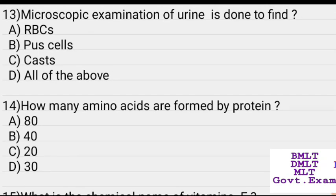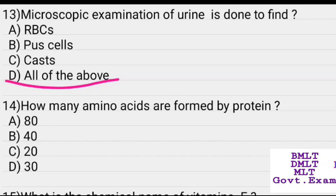Microscopic examination of urine is done to find all of the following. How many amino acids are formed by protein? Options: 80, 40, 20, 30. Answer: 20.